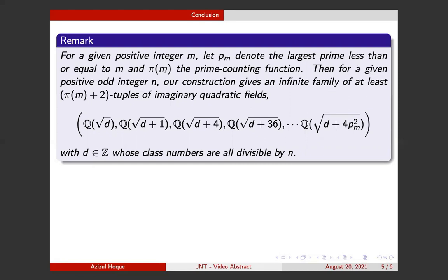Then, for a given positive odd integer n, our construction gives an infinite family of at least (π(m)+2)-tuples of imaginary quadratic fields of these forms whose class numbers are all divisible by n.